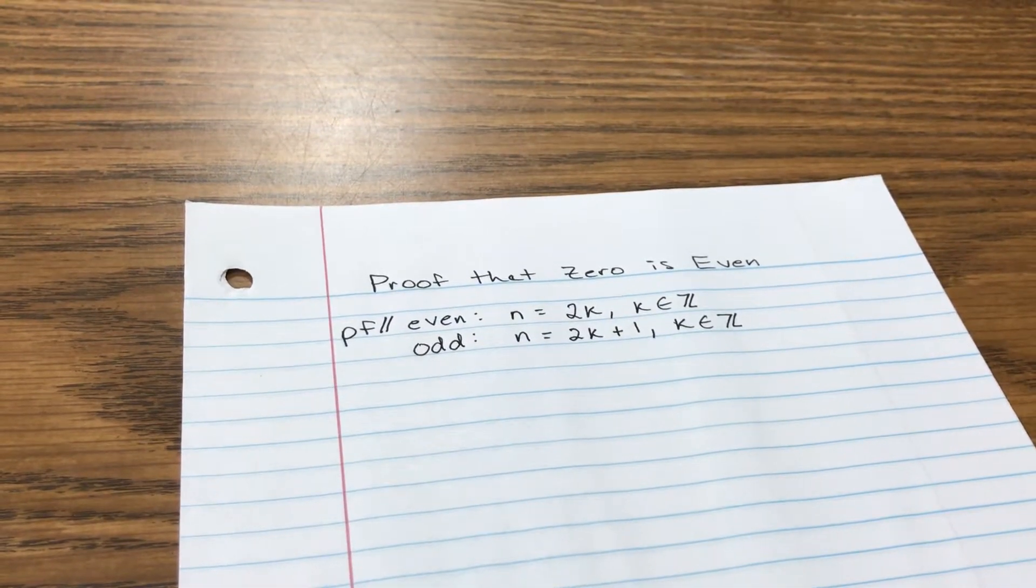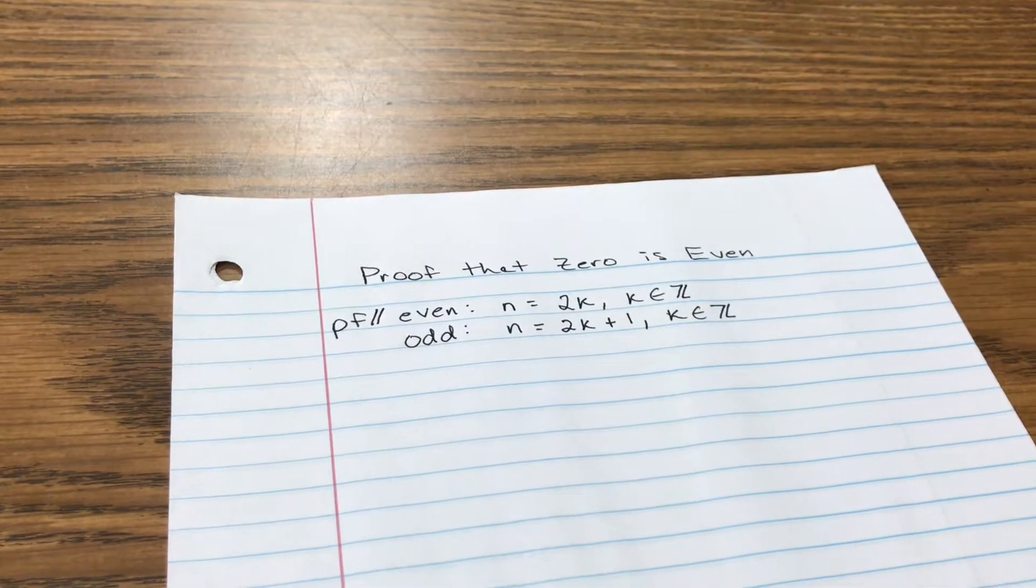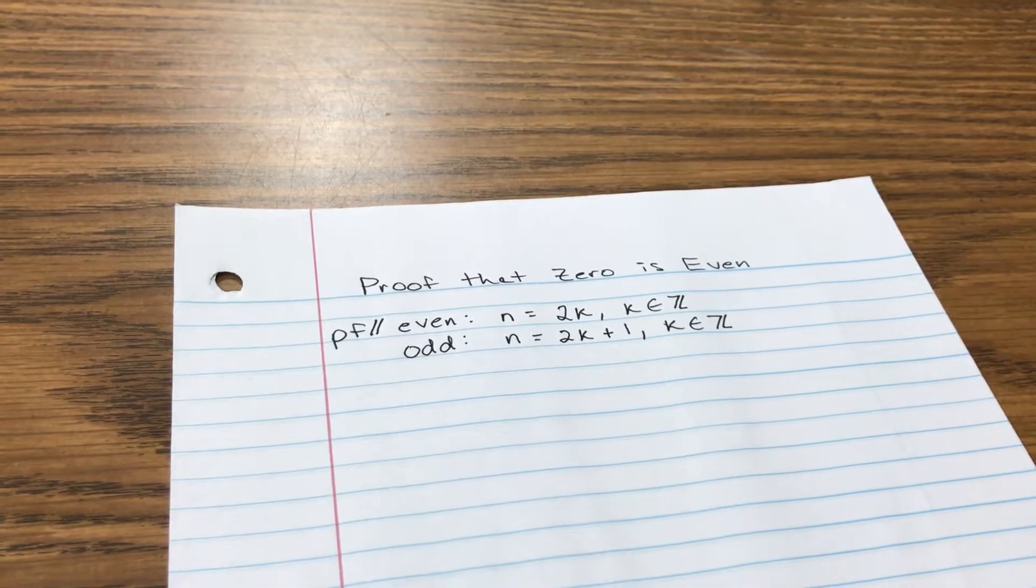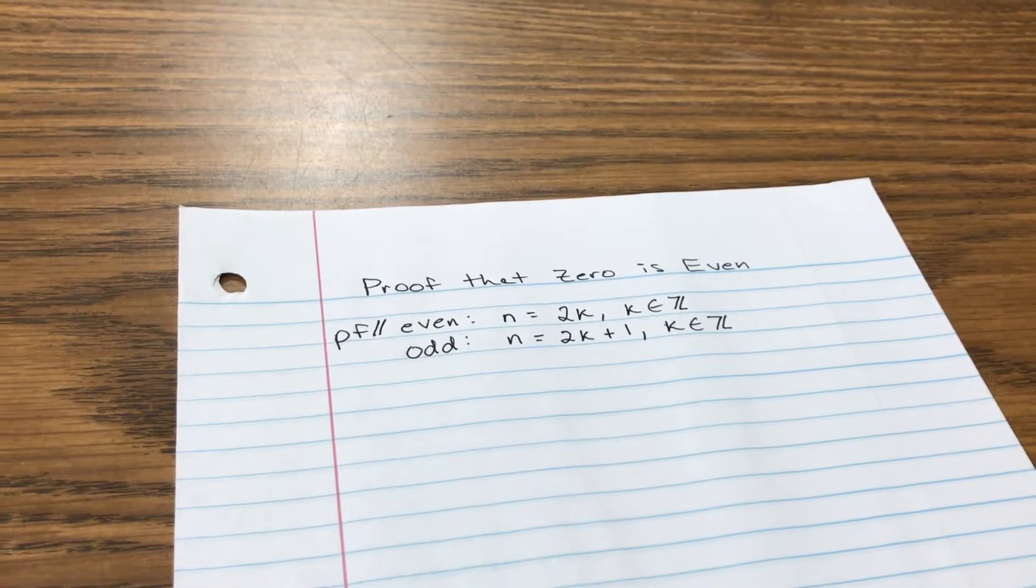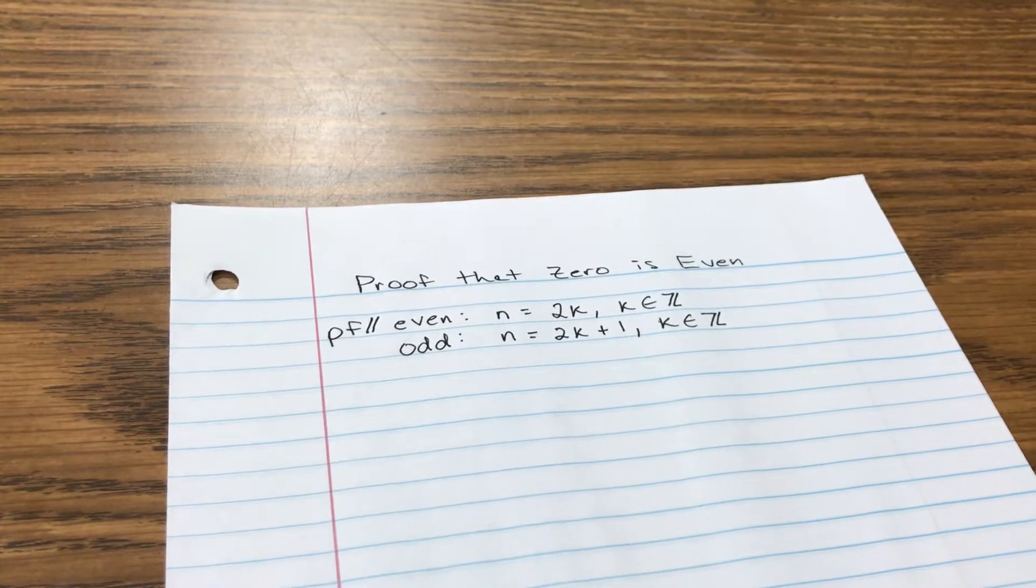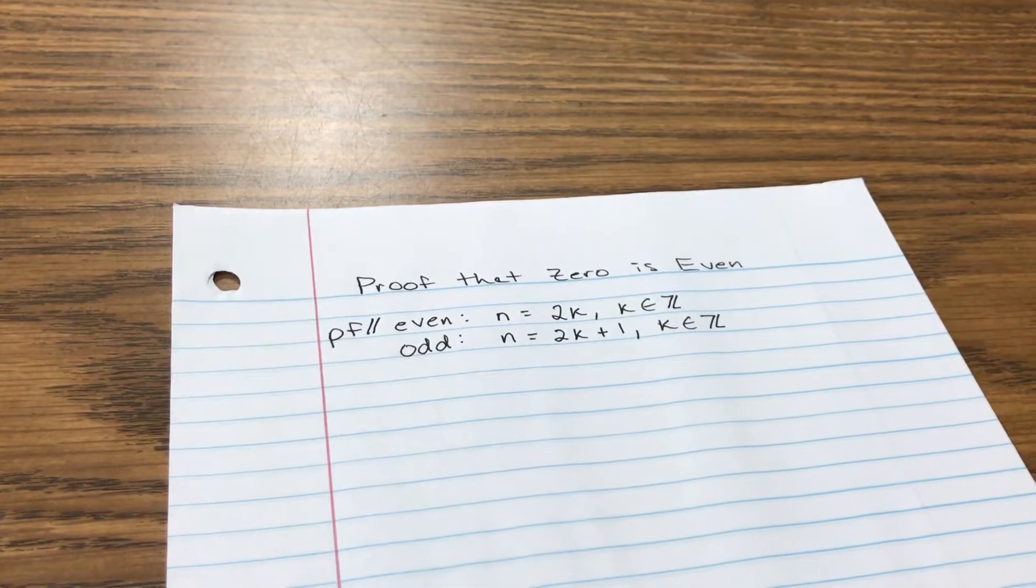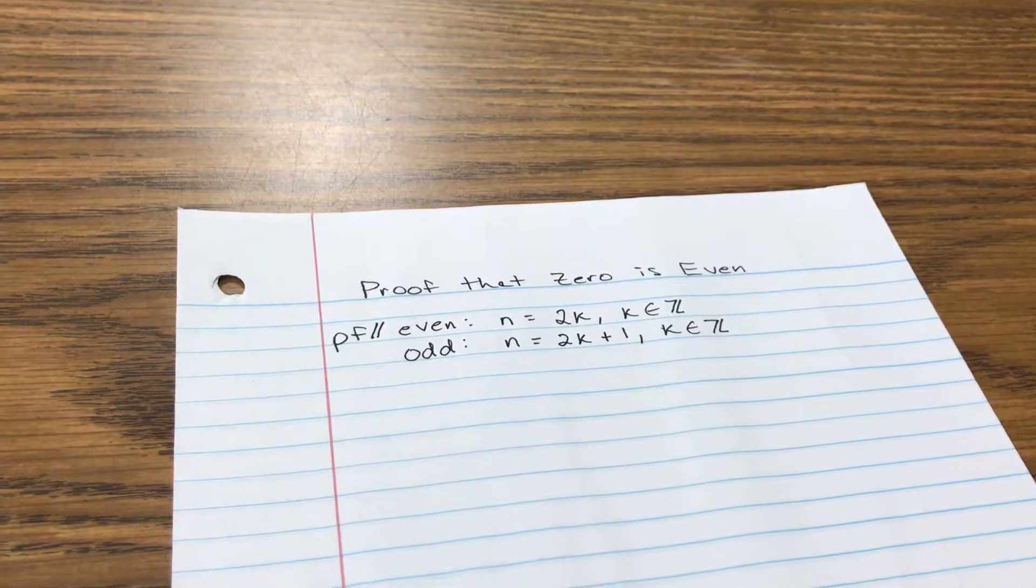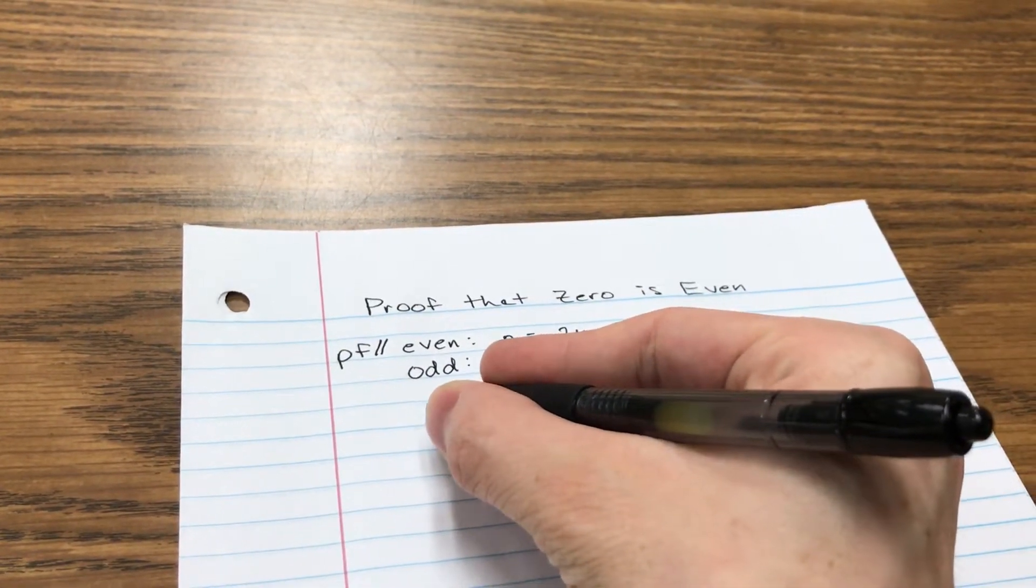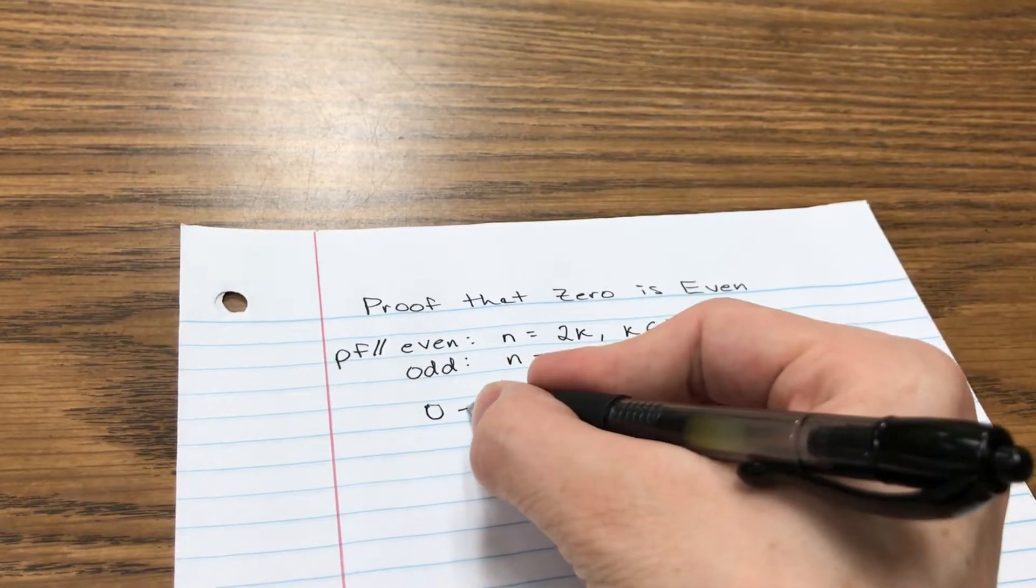Now let's go ahead and assume that 0 is not even. This is called a proof by contradiction. So what I'm going to do is assume the opposite of my conclusion. I'm going to assume, just for the proof's sake, that 0 is odd. What that would mean is 0 would have to be written as some kind of 2k plus 1.